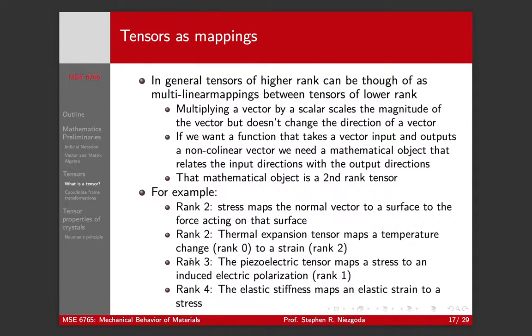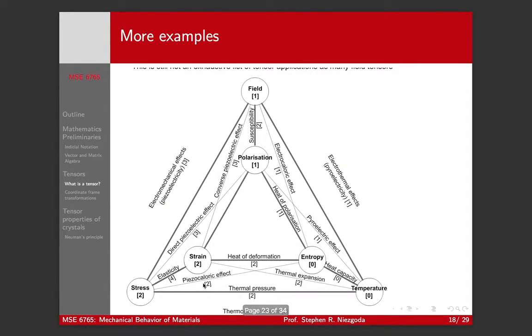Rank three is the piezoelectric tensor, maps a stress to an electric polarization, rank two to rank one. Two plus one gives you three, so you need a third rank tensor for the piezoelectric tensor. And rank four, elastic stress to elastic strain, is a rank four tensor. Here's a whole bunch of different material properties and the rank that they are.